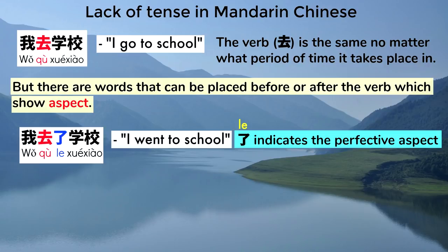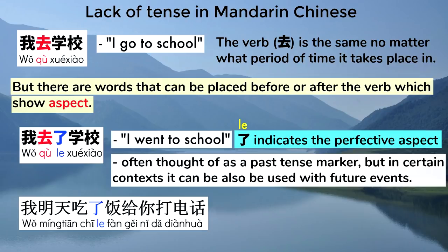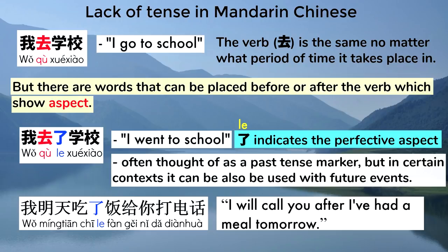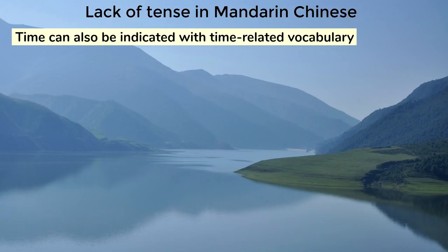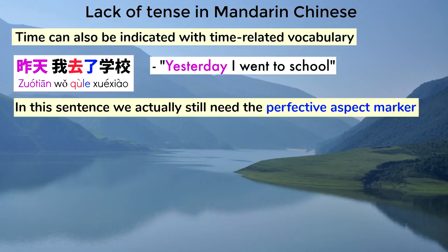This is often thought of as a past tense marker, but in certain contexts it can be used with future events. For example, this means I'll call you after I've had a meal tomorrow. Time can also be indicated with time related vocabulary. This means yesterday I went to school. You can see that we've added the word for yesterday. In this sentence we actually still need the perfective aspect marker because the verb here is an action verb with a definite start and finish. But in some sentences the perfective aspect marker is not needed.